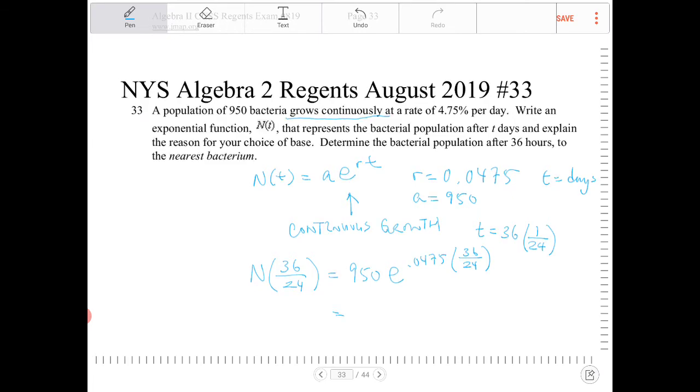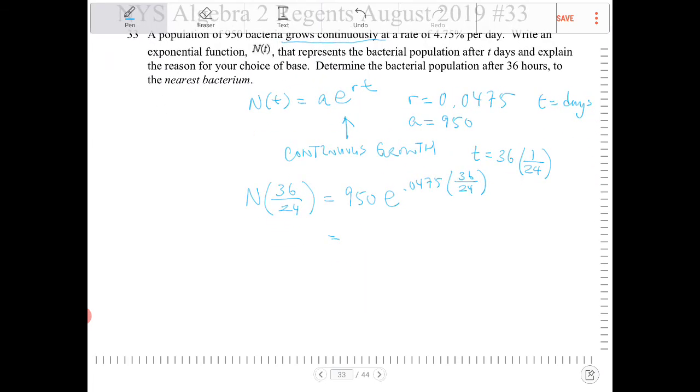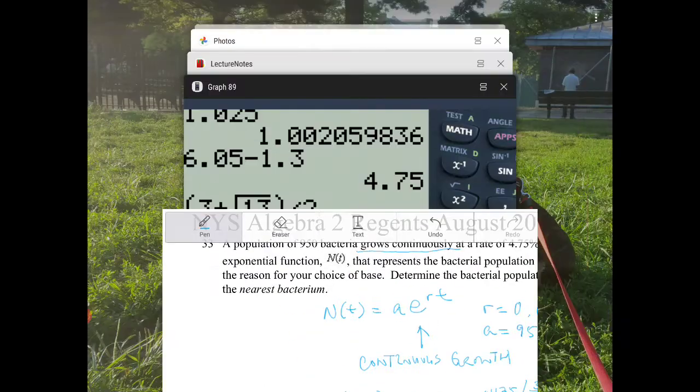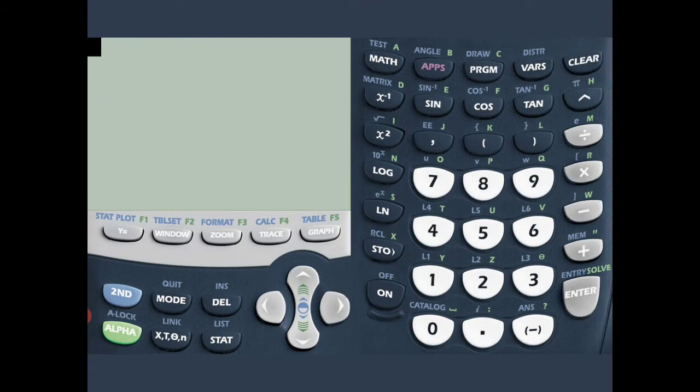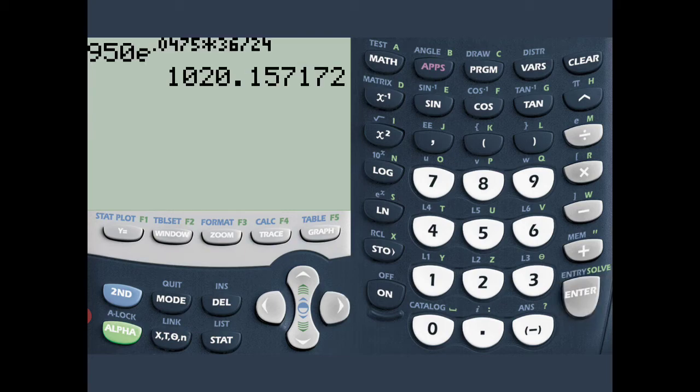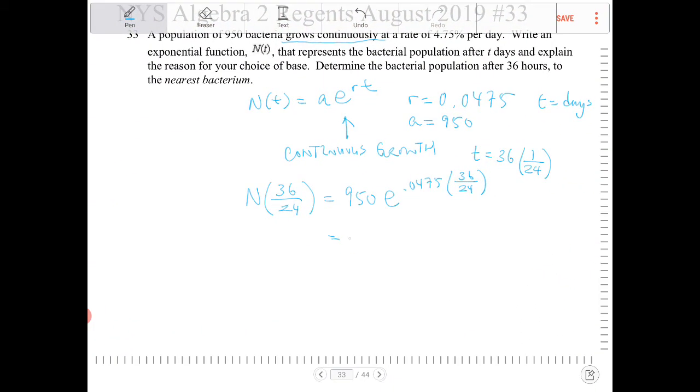And all we've got to do is just enter that into the calculator, and then it says to the nearest bacterium, so that means to the nearest whole number. So we're going to go to the calculator. 950, second LN, 0.0475 times 36 divided by 24, and then press enter. So we get 1,020. This will be 1,020 bacterium.